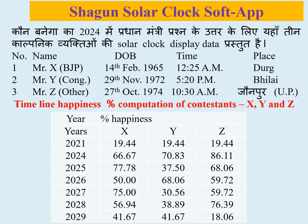Computer screen पर तीन काल्पनिक व्यक्तियों की solar clock display data प्रस्तुत है। प्रश्न है कि इनमें से कौन 2024 में प्रधान मंत्री बनेगा। तीनों candidates में जनता द्वारा elected एक व्यक्ति प्रधान मंत्री का पदभार एक जनवरी 2024 सुबह 11 बजे ग्रहण करेगा। दिये हुए data के आधार पर timeline 50% को computer screen पर दिये table में calculate किया है।